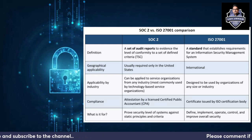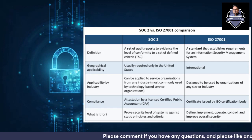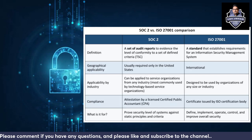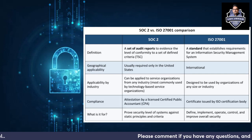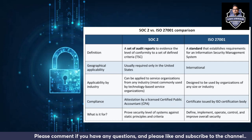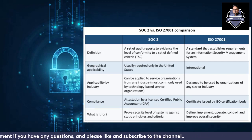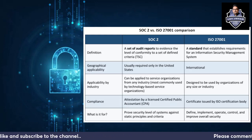Since ISO 27001 is globally recognized, it is international in nature as far as geographical applicability is concerned. SOC 2, however, is usually required only in the United States. For industry applicability, ISO 27001 is designed to be used by organizations of any size or industry, whereas SOC 2 is used for service organizations — most commonly technology-based service organizations.